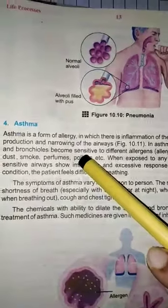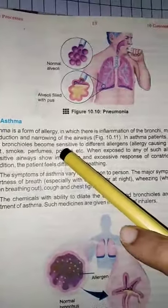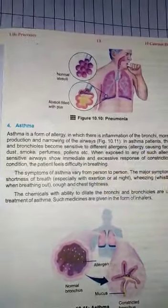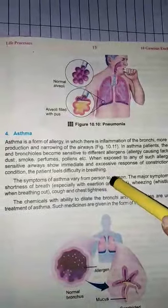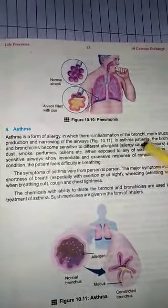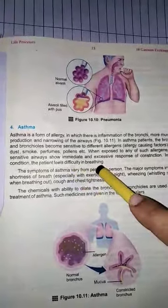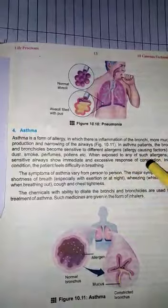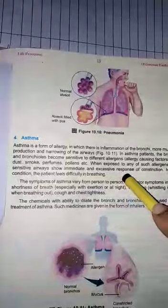It may be triggered by dust, smoke, perfume, or pollens, and symptoms vary from person to person. Asthma is also due to the inflammation of the bronchi, increased mucus production, and narrowing of the air passageway. Patients become sensitive to different allergens.